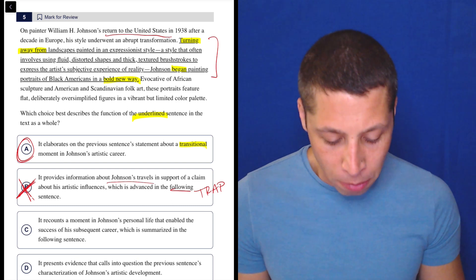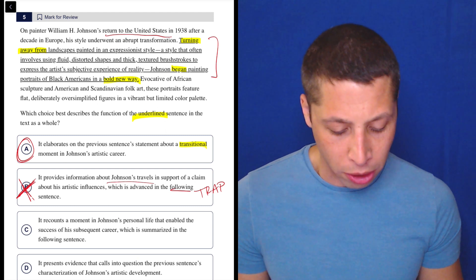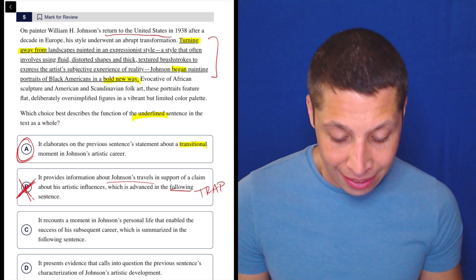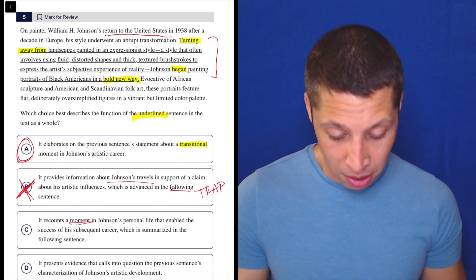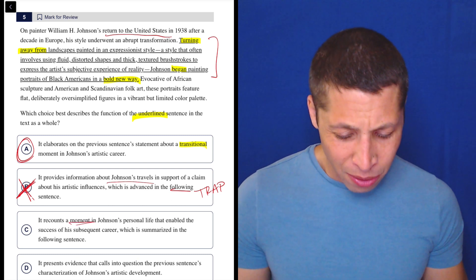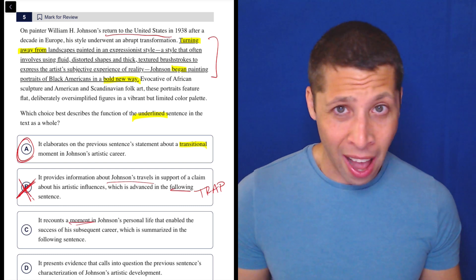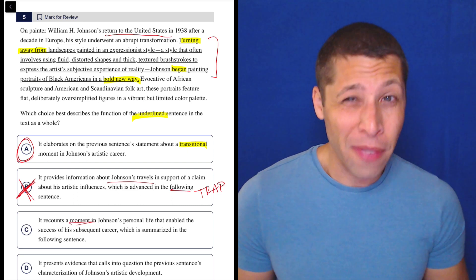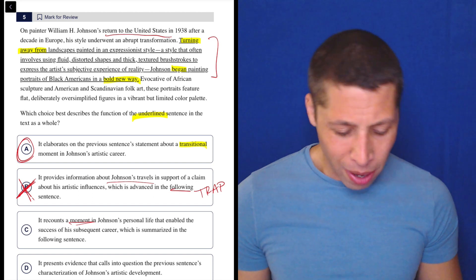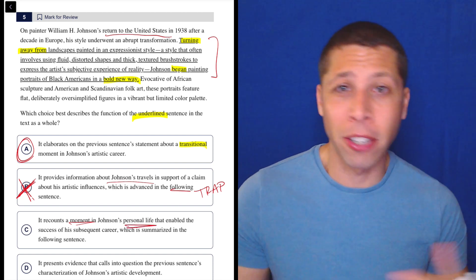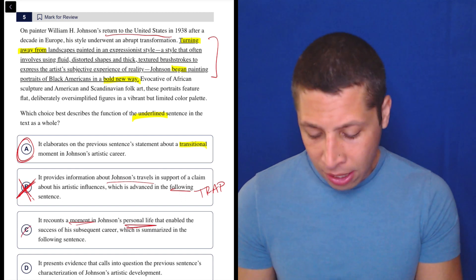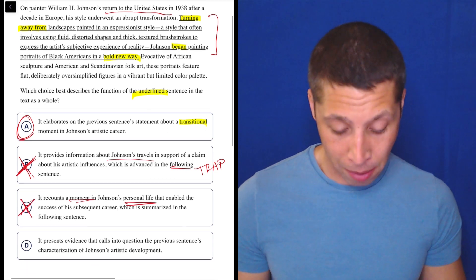C. It recounts a moment in Johnson's personal life that enabled the success of his subsequent career, which is summarized in the following sentence. So what is that moment, right? Again, turn the choice into a question. The moment is what? When he changed his style? That's not really his personal life. That's his artistic life. That's his career. I don't know. Personal life just does not seem like the right phrase here. That would be like if he got married or had a kid or something like that. So this just does not seem related to what we're talking about.